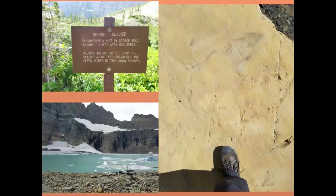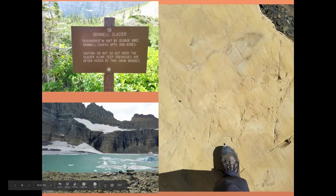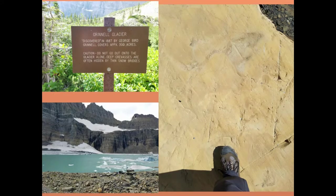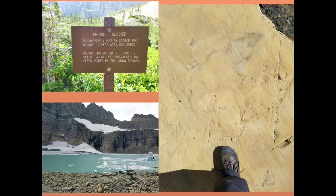At Grinnell Glacier at Iceberg Lake, you can see all the sediments left behind are completely unsorted — deposited by a glacier. There's a warning sign cautioning not to go onto the glacier alone because deep crevasses are often hidden by thin snow bridges. When doing glacier travel, people rope themselves together so they don't fall in.